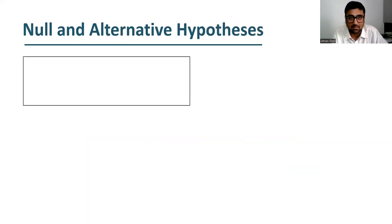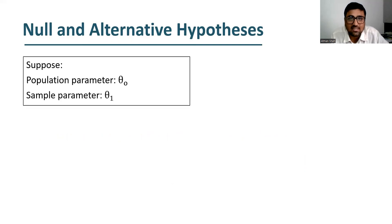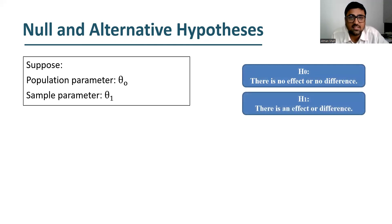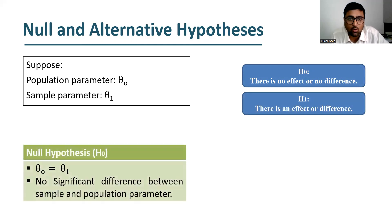Let's understand it with the help of an example. Suppose our population parameter is theta 0 and sample parameter is theta 1. Null hypothesis says there is no effect or no difference, and alternative hypothesis says there is an effect or difference. So the null hypothesis says that theta 0 is equal to theta 1, or there is no significant difference between sample statistic and population parameter.